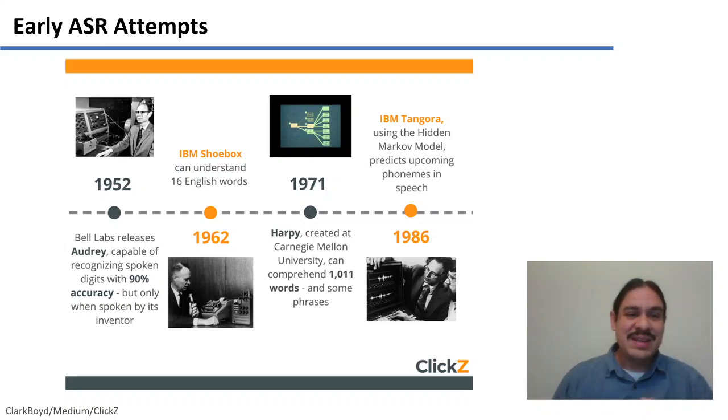The Audrey system in 1952 was capable of recognizing digits from 0 to 9 but only from the voice of the person who made the system, because the system was made to filter out certain frequencies in the person's voice and then to write 0, 1 or 2 and so forth.